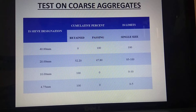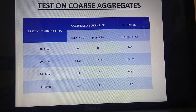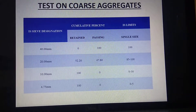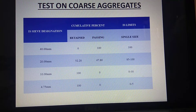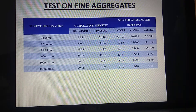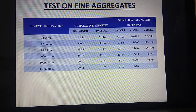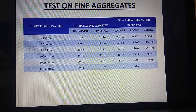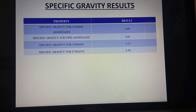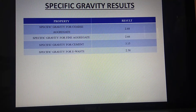Testing of coarse aggregate: This is the test we have done for coarse aggregate. Tests were also conducted for fine aggregate — sand is called fine aggregate — for which we performed sieve analysis. Specific gravity results were noted for the coarse aggregate, fine aggregate, cement, and also for the e-waste.